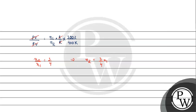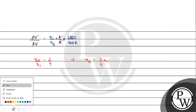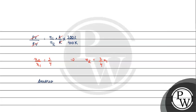The fraction of original gas expelled is given by n1 minus n2 over n1. Substituting n2 equals three-fourths of n1, we get 1 minus 3 by 4, which equals 1 by 4. So the fraction of air that goes out is 1 by 4, which is option B.